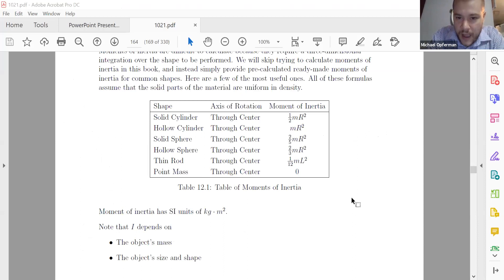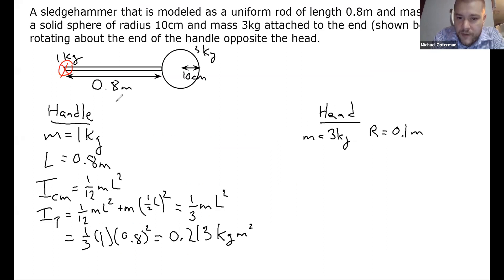So if I flip over to my table of moments of inertia, my shape is a solid sphere. So that means I'm looking for this formula here. So that's going to be my ICM, 2 over 5 MR squared.